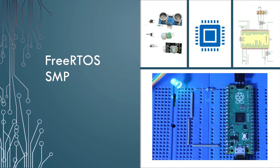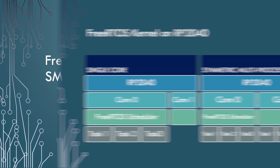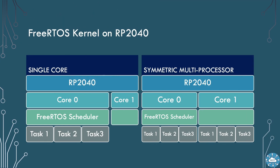FreeRTOS has a capability to run across multiple cores called Symmetric Multiprocessing, SMP. This will allow us to make use of both cores of the RP2040, but only worry about FreeRTOS functions. With SMP, we can actually make use of both cores on the RP2040 with FreeRTOS kernel using the Symmetric Multiprocessing feature.